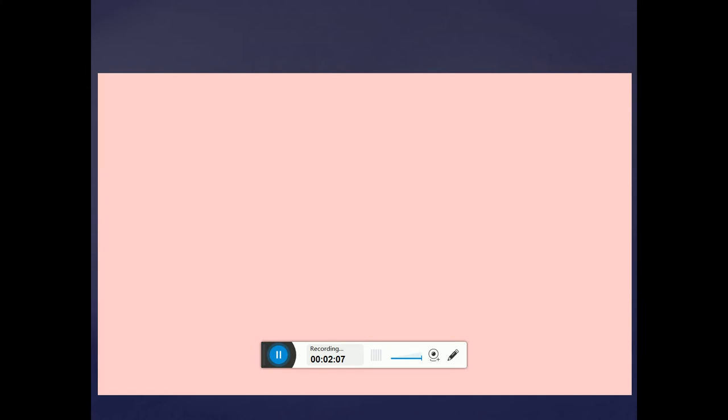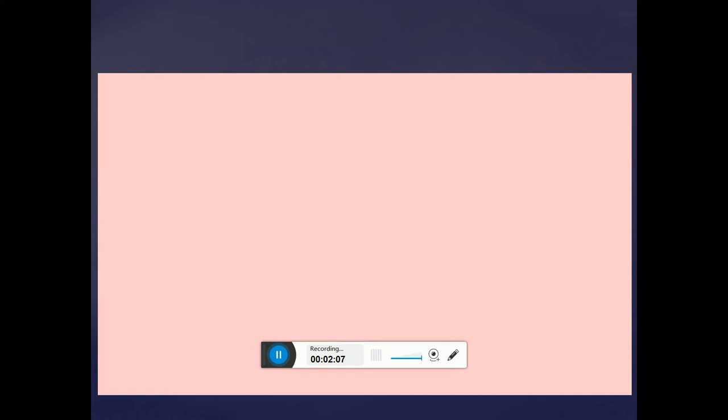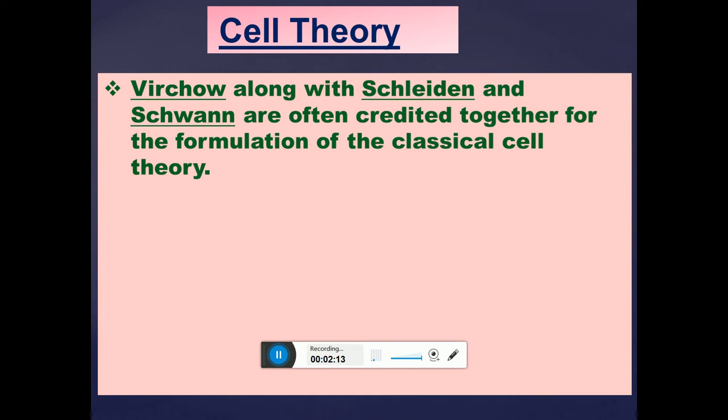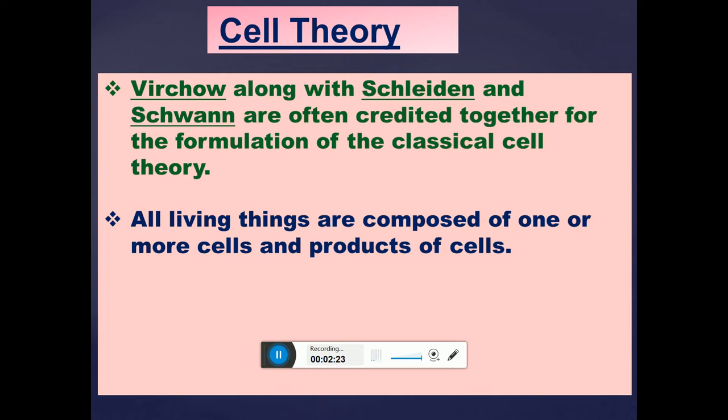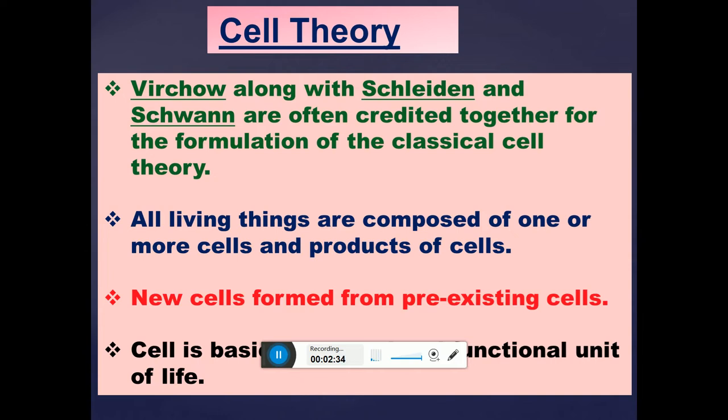In the same period, Schwann proved that all animals are made up of cells and covered with a thin plasma membrane. After him, Rudolf Virchow proved that new cells are formed from pre-existing ones. Virchow, along with Schleiden, is credited with formulating the classical cell theory, which includes three points: all living things are composed of one or more cells; new cells form from pre-existing cells; and the cell is the basic structural and functional unit of life.